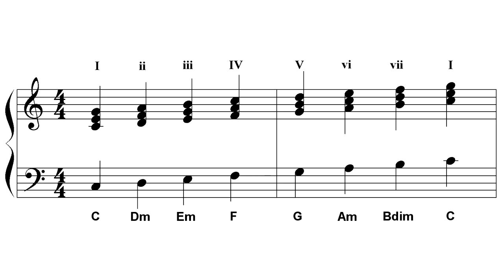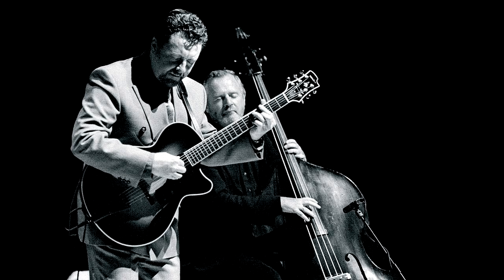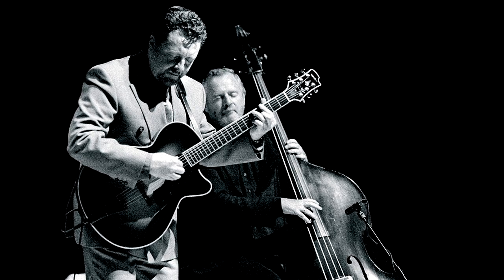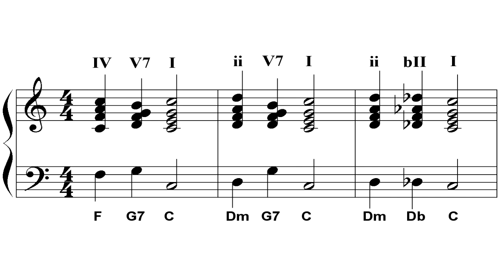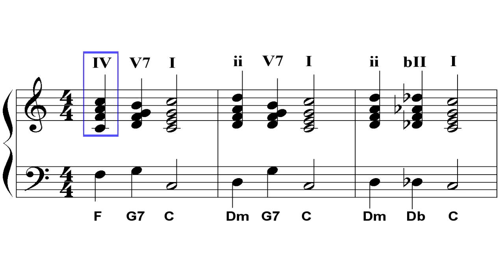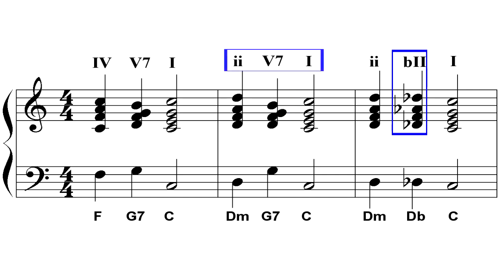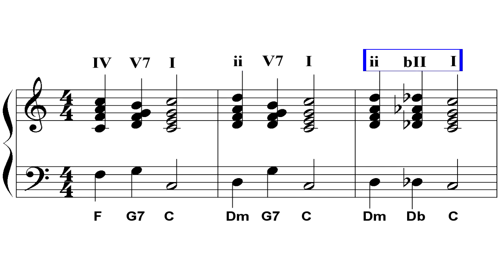Using substitutions is a big part of how jazz works, and good players use substitutions routinely to vary a tune from one verse to the next. A common substitute for the standard IV-V-I progression replaces the IV chord with its relative minor, the II chord. Another common substitution is to replace a V chord with a flat II chord, so instead of II-V-I, you use the descending pattern II to flat II to I.